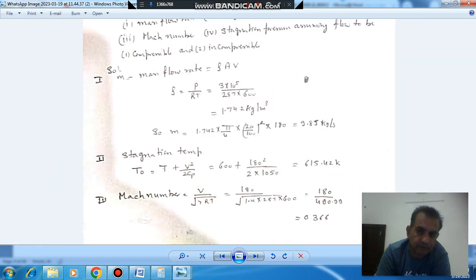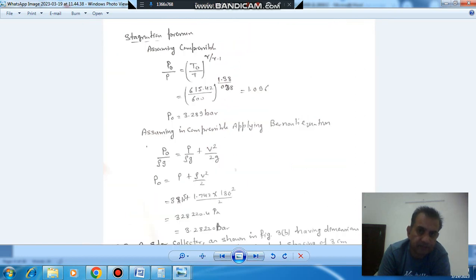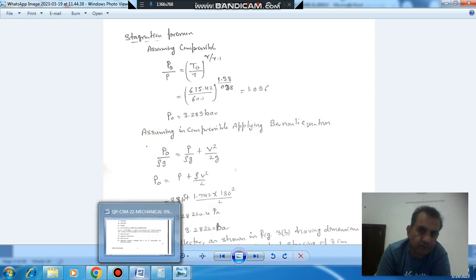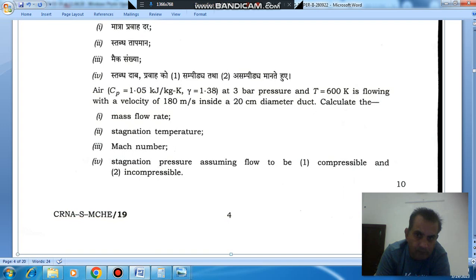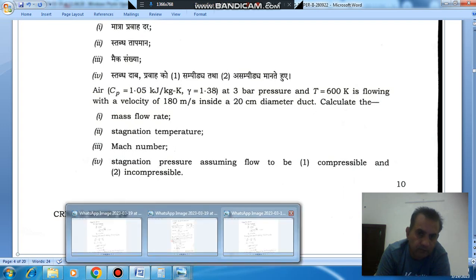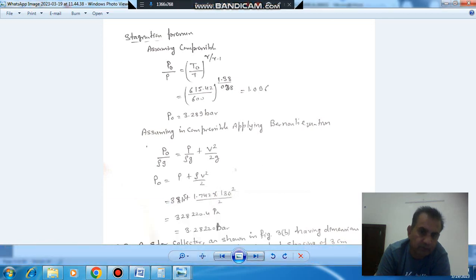Next is stagnation pressure for compressible flow. We can apply the isentropic condition. You know P0 by P equals T0 by T to the power gamma by gamma minus 1. T0 is 615.42, T is 600, and gamma is given as 1.38. So this comes out as 1.0696. And P initial pressure is given as 3 bar. So multiply it by 3 bar, we get 3.2988 bar. So this is when we assume compressible flow.